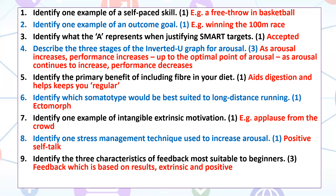Number nine: three characteristics of feedback most suitable for beginners. The acronym you need to remember is REPIN. For beginners, the R means feedback based on results, E means the feedback should be extrinsic, and P means it should be positive. For elite performers, it would be the PIN part: P is feedback based on performance, I is intrinsic, and N is negative. In a question, you would then have to go on and justify each of those things, but you don't have to do that right now.